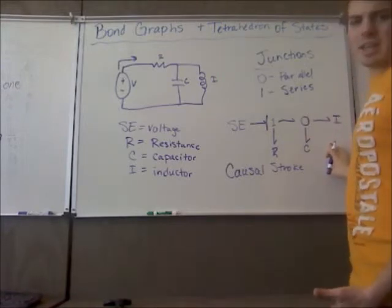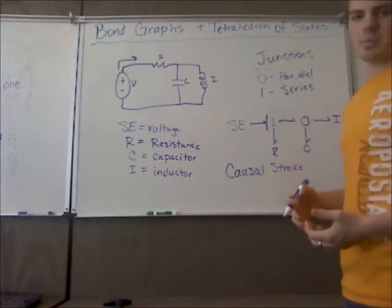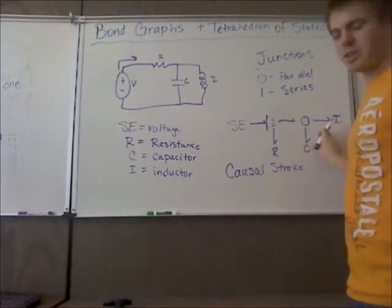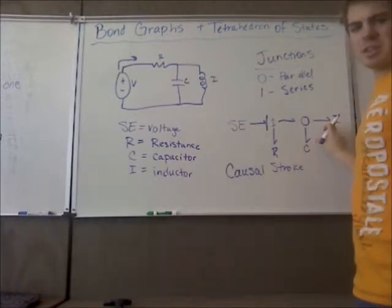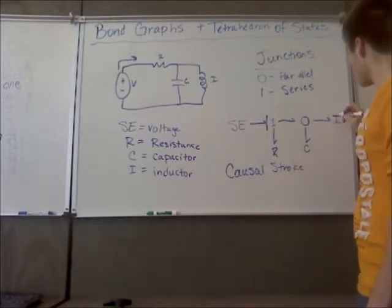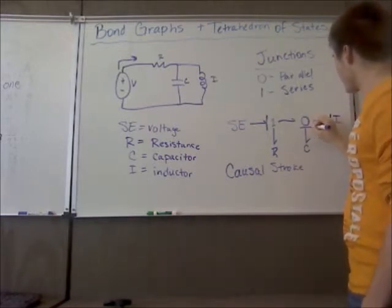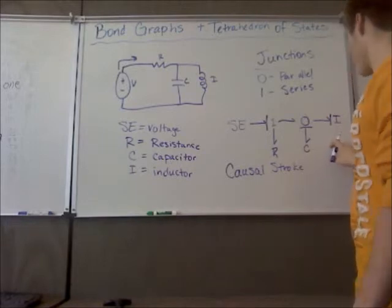Sometimes they can't always have what they want, and that would be called compliance. But if it's integral causality, that means they're going to have their way, and they're going to be able to do it the way they want. So I'm just going to assign the inductor the way it wants to, and the capacitor the way it wants to. And I want to see if this is going to work out.